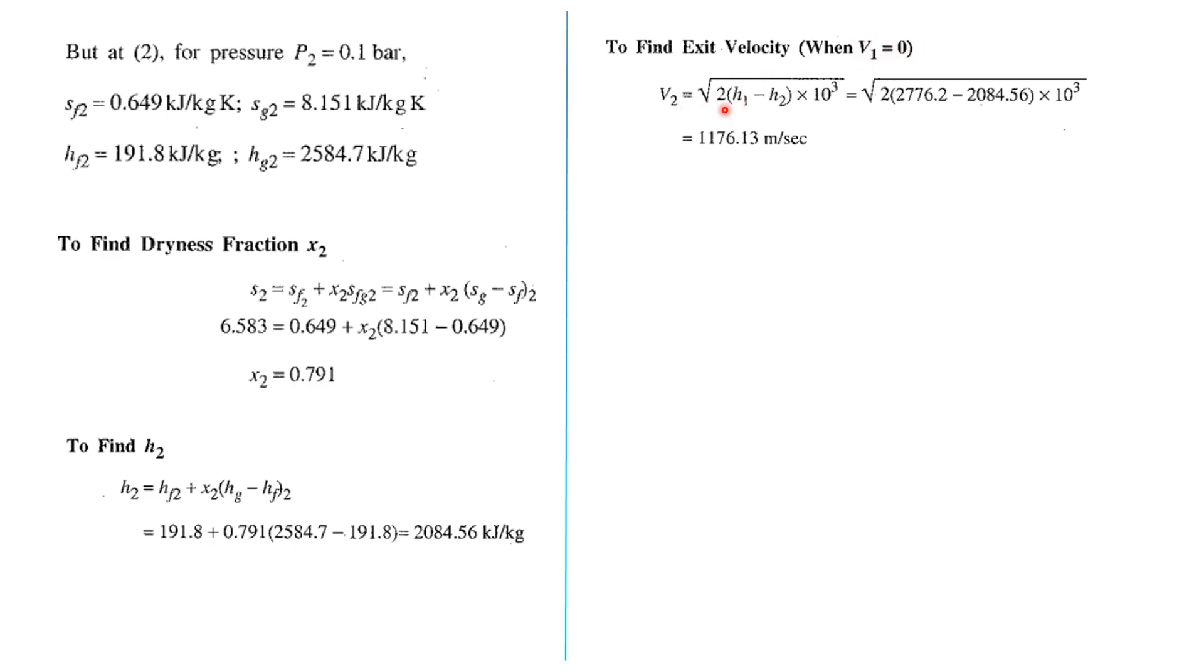V2 is equal to square root of 2 times (h1 minus h2) times 10 raised to 3. You get it as 1176.13 meter per second. And if we consider the inlet velocity, we get a higher value by adding v1 square inside the root.